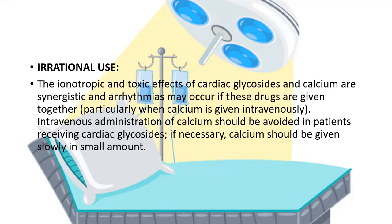The irrational use relates to the inotropic and toxic effects of cardiac glycosides. If calcium and cardiac glycosides are taken synergistically, arrhythmia may occur. If these drugs are given together — particularly when calcium is given intravenously — intravenous administration of calcium should be avoided in patients receiving cardiac glycosides. If necessary, calcium should be given slowly in small amounts.